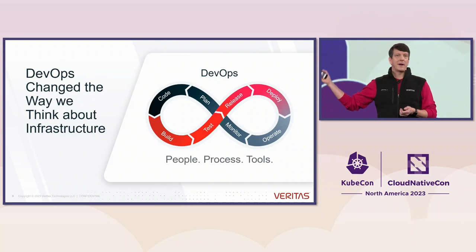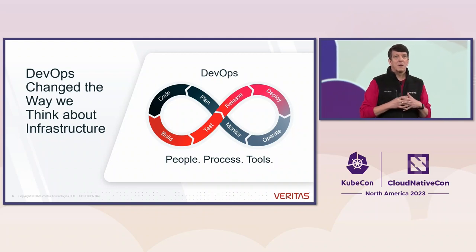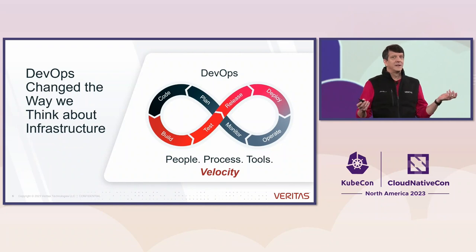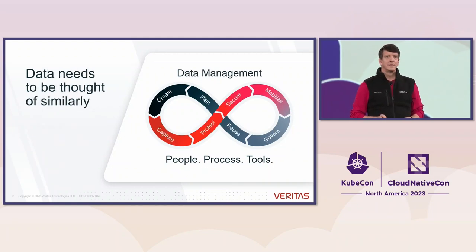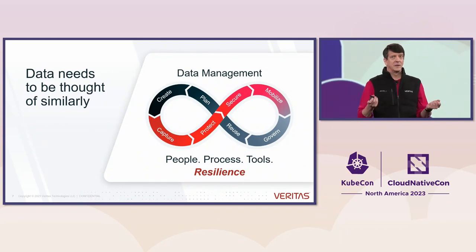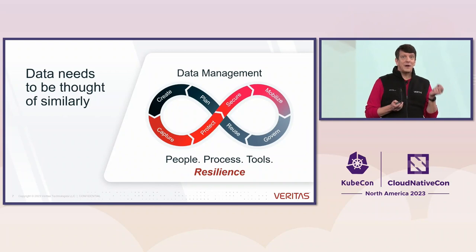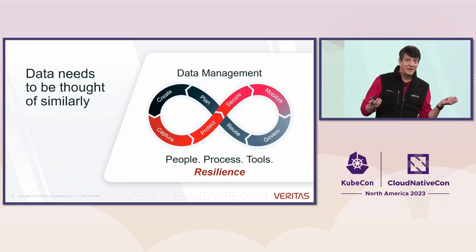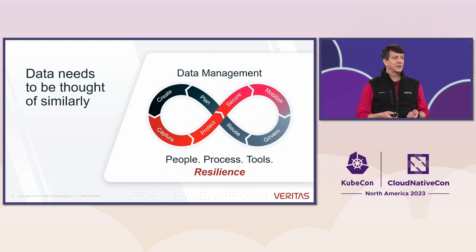DevOps changed the way we think about apps and infrastructure, bringing together developers and operations teams and their processes and tools, primarily in support of velocity of innovation — staying ahead of the competition through continuing iteration, learning, and being agile. I would posit that we need to do the same thing for data and its life cycle: bringing together people, culture, processes, and tools to ensure resilience. We can do better than 22% of the time software failure being responsible for data loss, and we can make the operational aspects of our applications more resilient.